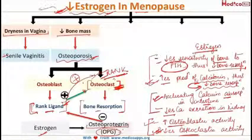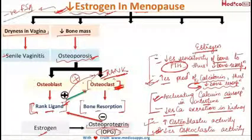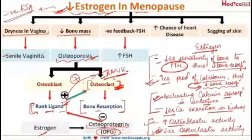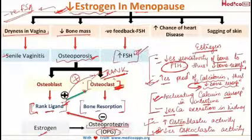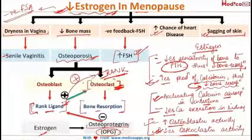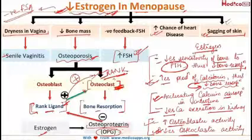Estrogen has a negative feedback action on FSH, so with no estrogen, FSH levels increase — a diagnostic feature of menopause. Decreased estrogen also increases the chance of heart disease. Estrogen is responsible for skin elasticity, so in menopause, there will be thinning and loss of elasticity of the skin, leading to sagging.